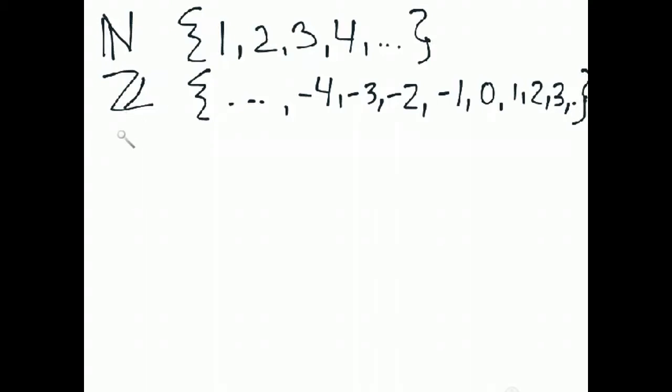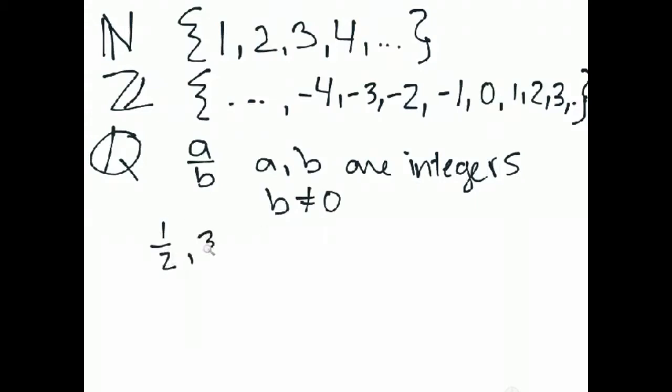With integers, we can combine them into something called rational numbers. Rational numbers are simply numbers of the form A over B, where A and B are both integers, and specifically B cannot be equal to zero. Some examples: 1 half, 3 fourths. They don't have to be less than 1, maybe 6 fourths. They also don't have to be in fully reduced form.